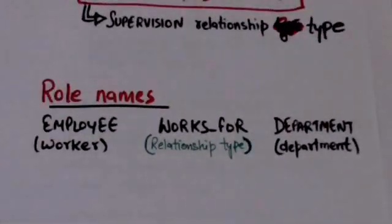Each entity type that participates in a relationship type plays a particular role in the relationship. Role name signifies the role that a participating entity from the entity type plays in each relationship instance. For example, in works for relationship type, entity type employee plays the role of worker and entity type department plays the role of department.